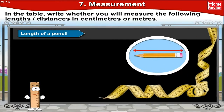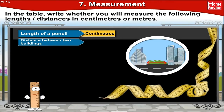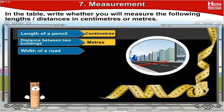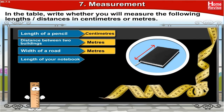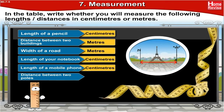Length of a pencil — that has to be measured in centimeters. Distance between two buildings — that has to be measured in meters. Width of a road — that has to be measured in meters as well. Length of your notebook — you will measure it in centimeters. Length of a mobile phone — that has to be measured in centimeters. Distance between two poles — that has to be measured in meters.